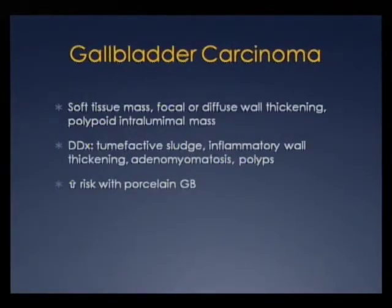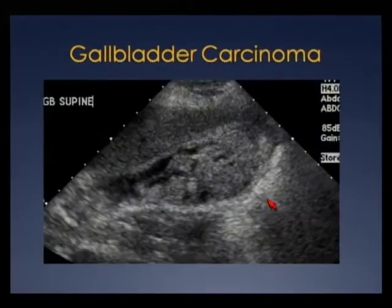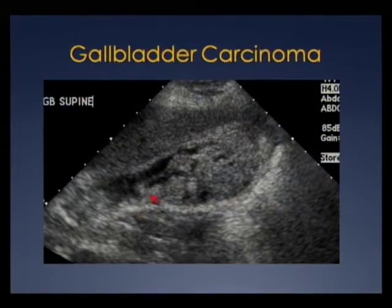Gallbladder carcinoma is uncommon and can have variable appearance — focal soft tissue mass, focal or diffuse wall thickening, or polypoid intraluminal mass. Tumefactive sludge, adenomyomatosis, and polyps can mimic it, and there is increased risk with porcelain gallbladder. Here's a patient with a large intraluminal mass filling the gallbladder — this is gallbladder carcinoma.